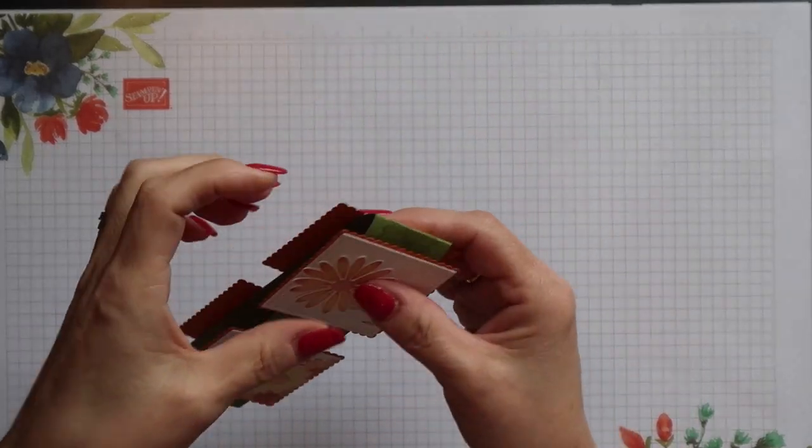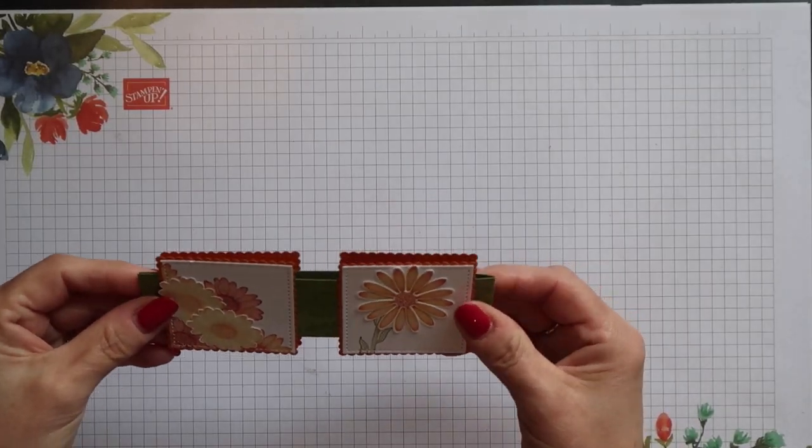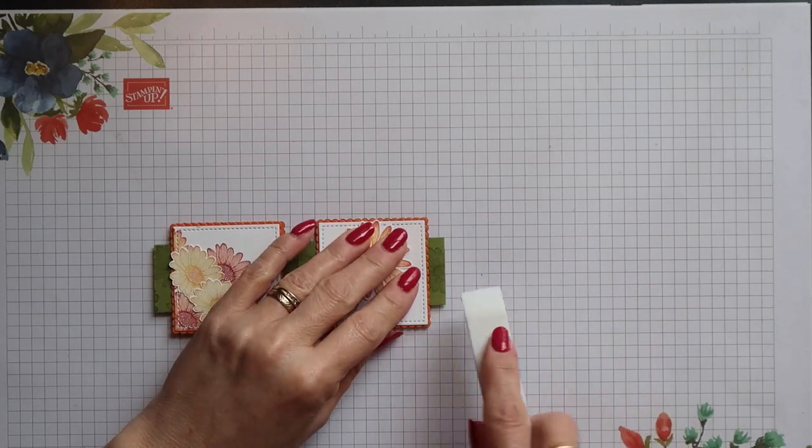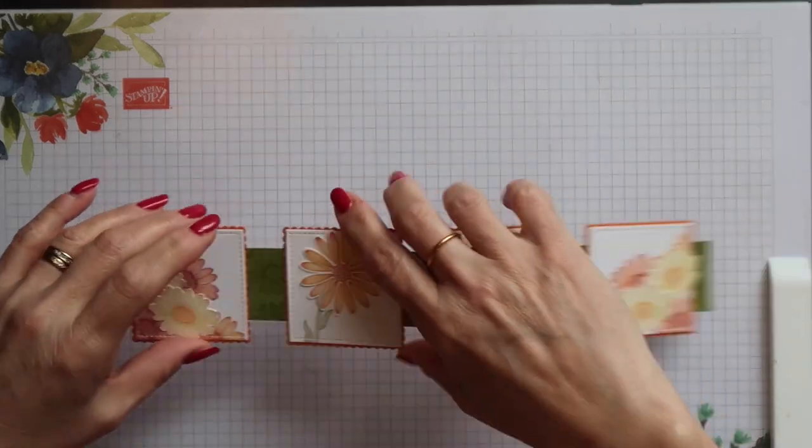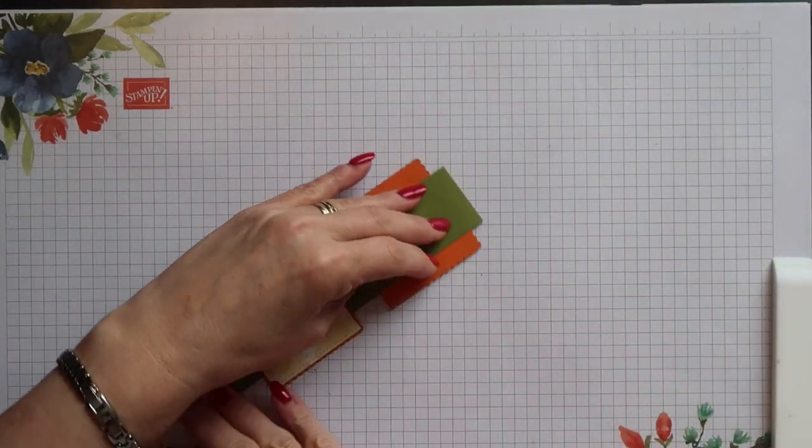Now fold on the score lines, the middle one needs to be a mountain fold and the other two need to be valley folds.